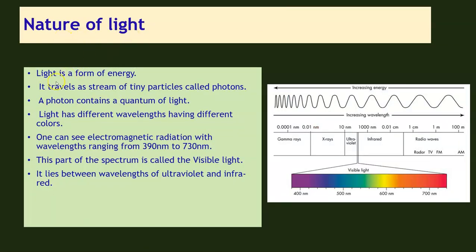Now let us look at the nature of light. Light is a form of energy. It travels as a stream of tiny particles called photons, and a photon contains a quantum of light. Light has different wavelengths having different colors. One can see electromagnetic radiations within the wavelength range of 390 nanometers to 730 nanometers. This small region is the region of visible light — it lies between the wavelengths of the ultraviolet and infrared regions of the spectrum.